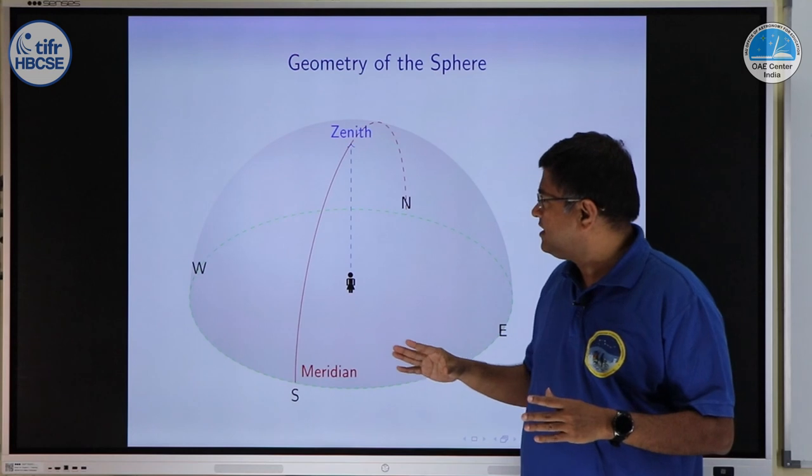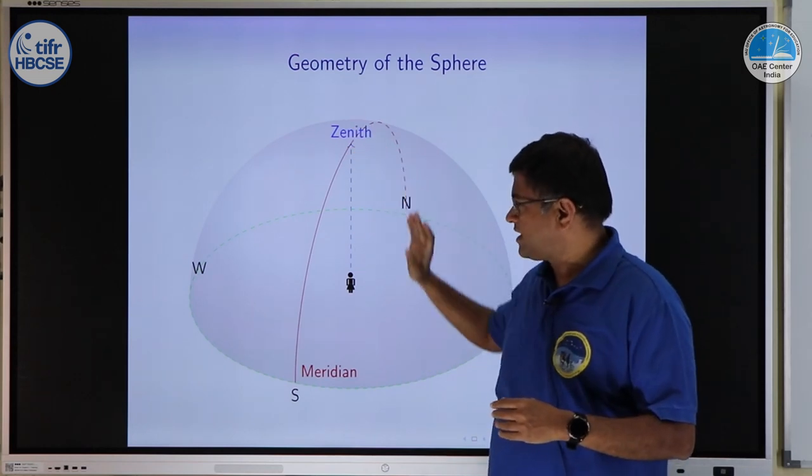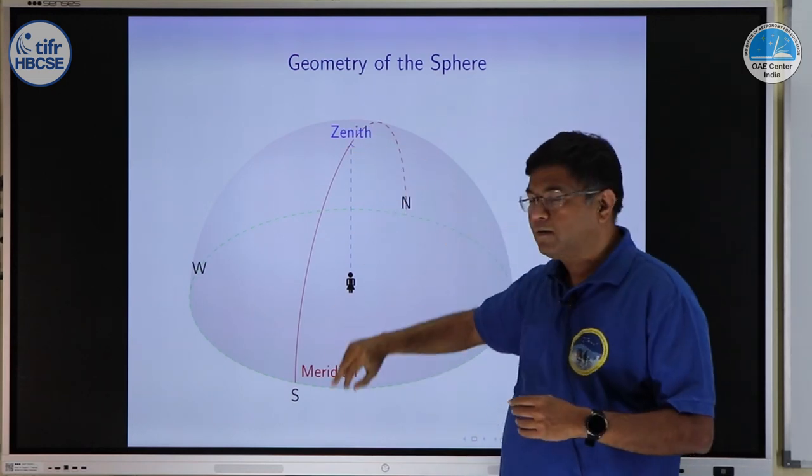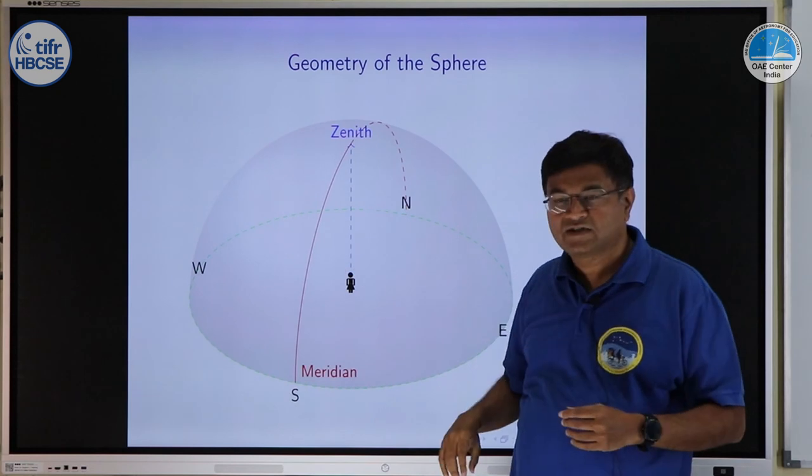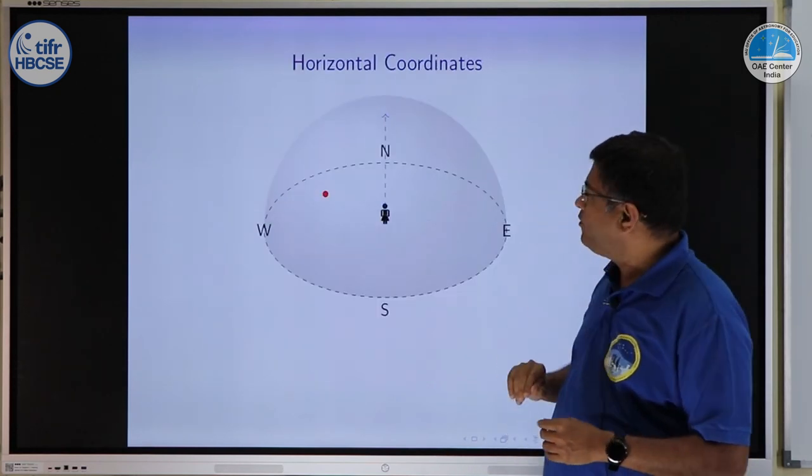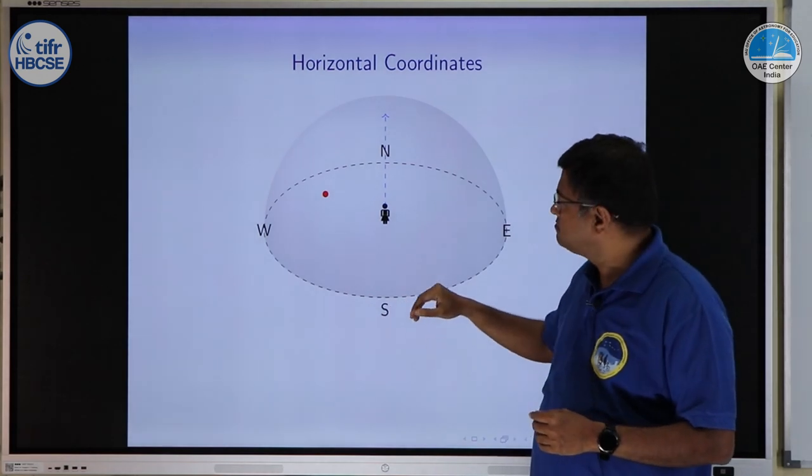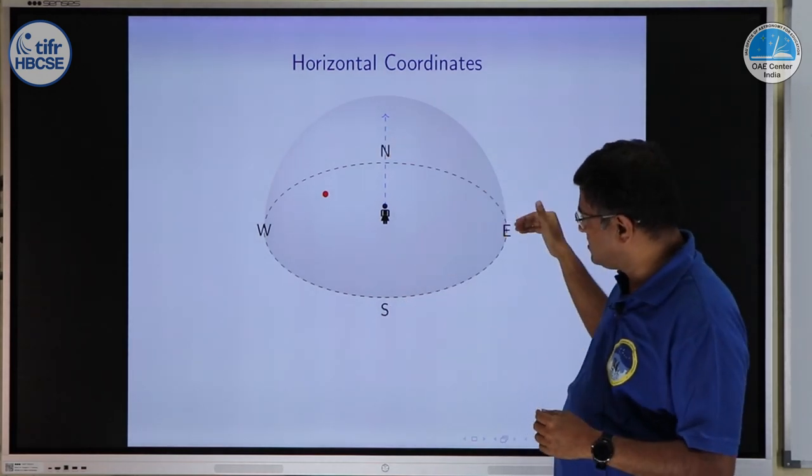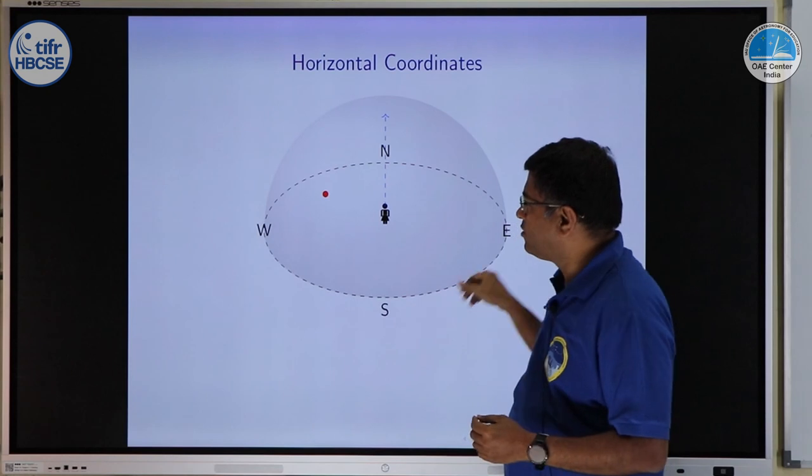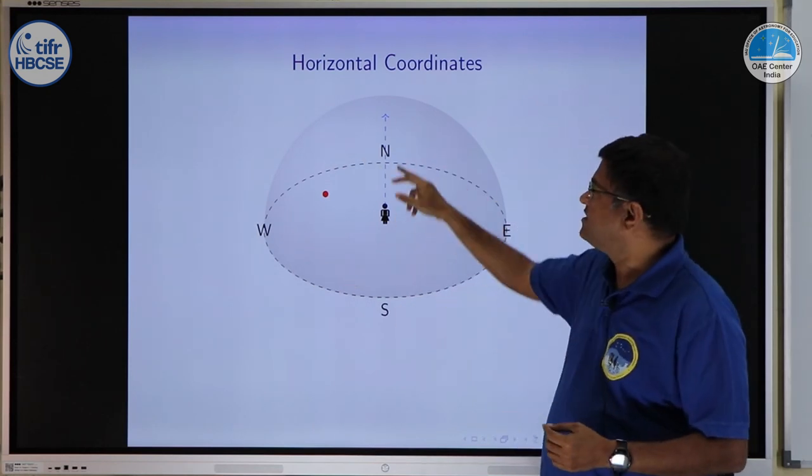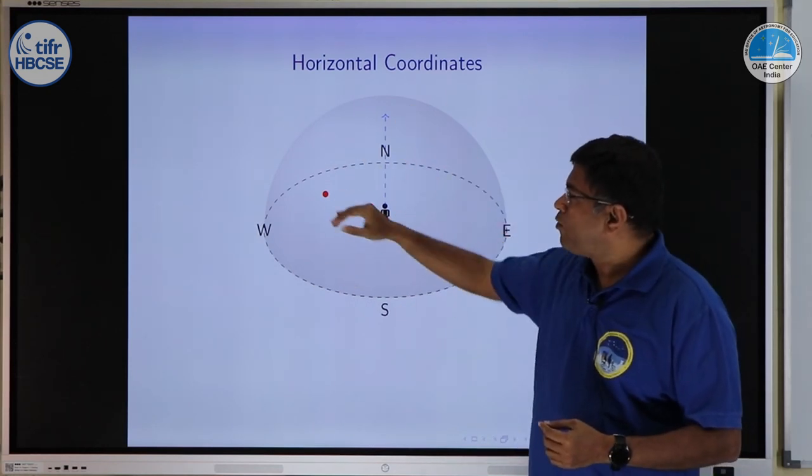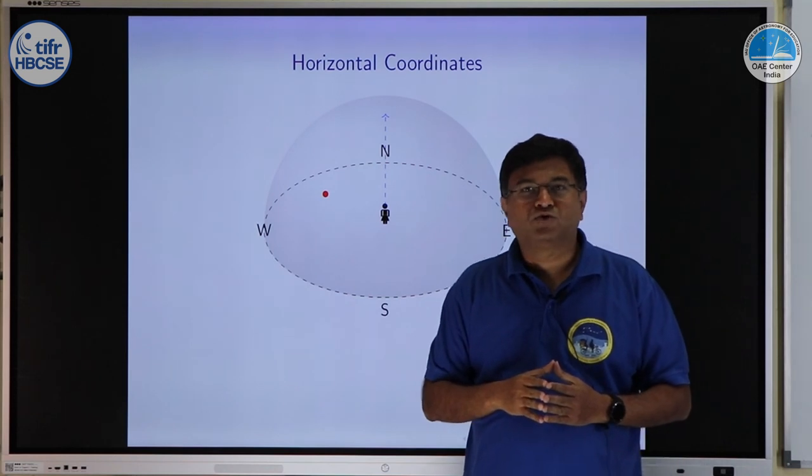On this picture you can see zenith is directly above, this is the meridian passing through zenith and connecting north and south. We have some star somewhere here on the celestial sphere, north is behind, this is east, south, west, so horizon for the observer and zenith is above. How can we describe position of this star?